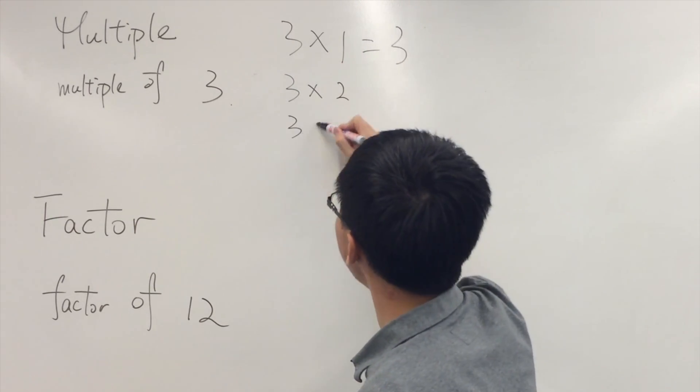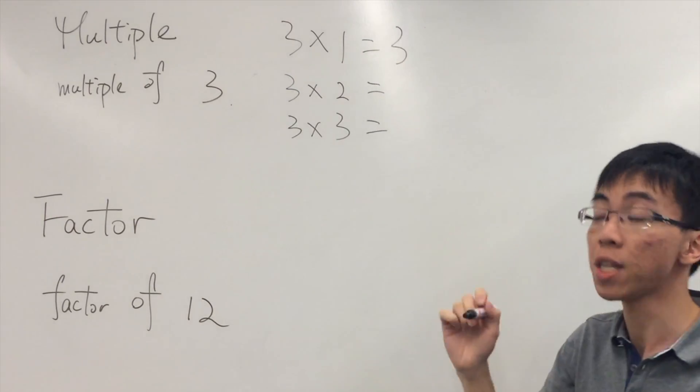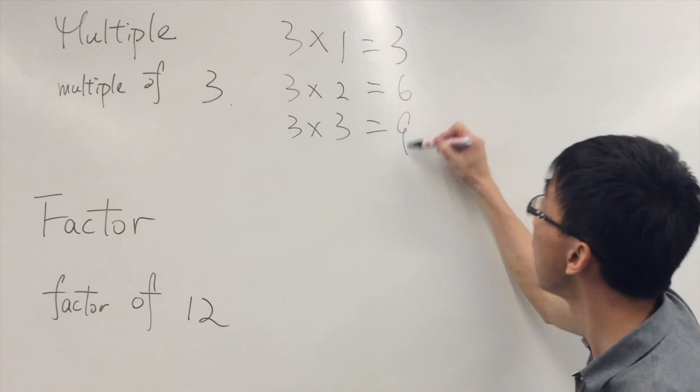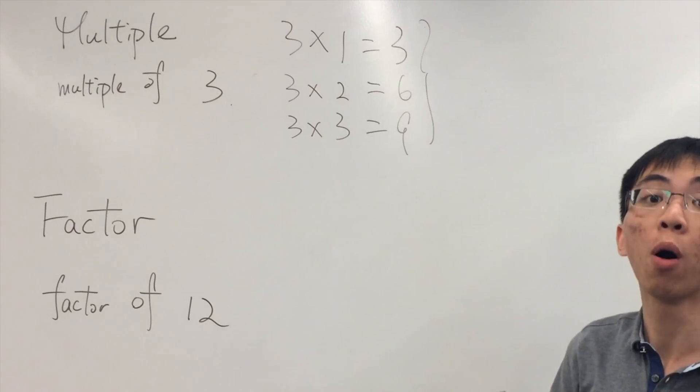So similarly, if we write some expressions that three times something, the products here, six and nine, they are all called a multiple of three.